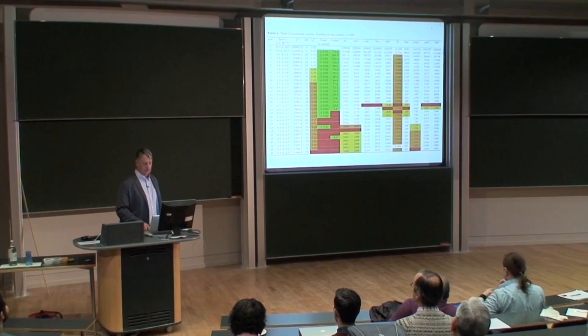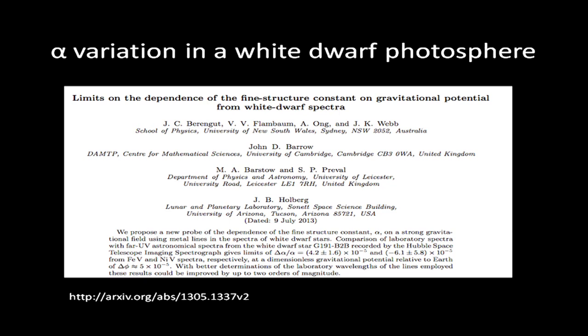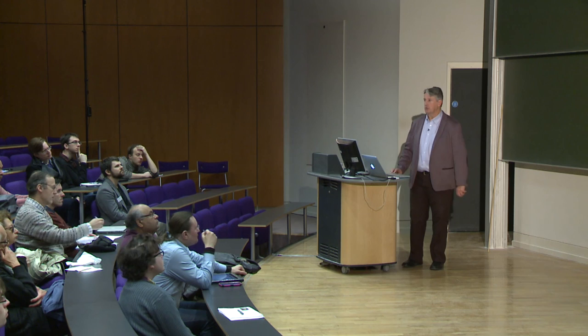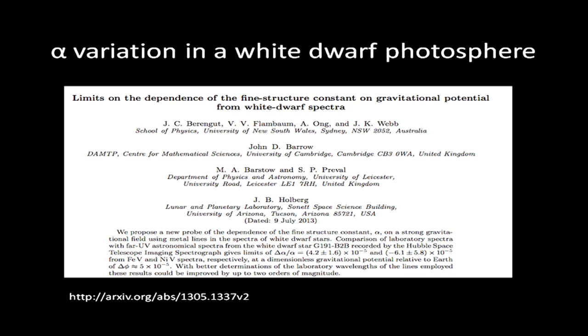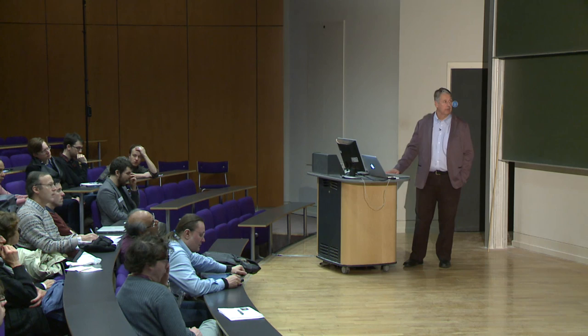I want to move on to a separate topic. Finding a dipole in alpha is a controversial thing and we've been trying quite hard to make it go away — this algorithm is part of that attempt. The second topic, changing direction for the rest of the talk, is to look at John Barrow's suggestion as to whether alpha could be varying with gravitational potential. One interesting place to look at this is in the photosphere of a white dwarf — one particular star, G191-B2B.